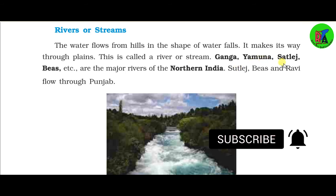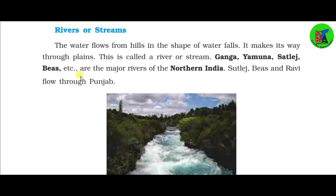Ganga, Yamuna, Sutlej, and Beas are the major rivers of northern India. Sutlej, Beas, and Ravi flow through Punjab.